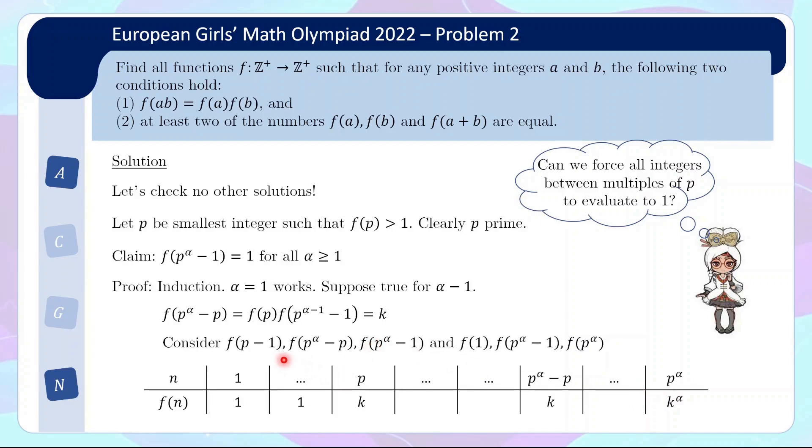If we have p minus 1 and this multiple of p, they add up to p to the alpha minus 1. So these three f values must have at least two values equal. So it's either this is 1, this is k, so this thing is 1 or k. And similarly, now we look at another trio, 1 plus p to the alpha minus 1 equals p to the alpha. So again, this trio must have two that are equal.